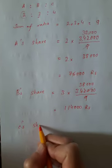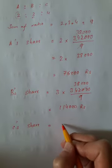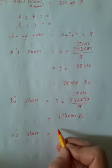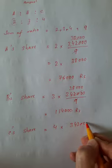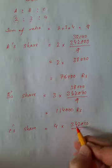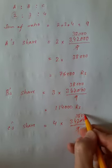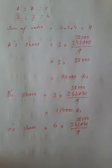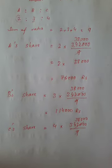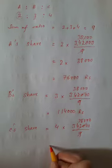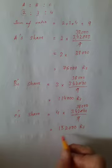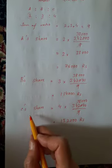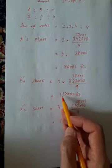C's share: 342,000 divided by 9, multiply by 4, which gives us 152,000 rupees for C.